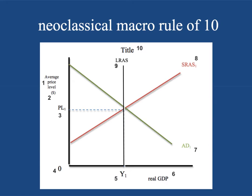Very simply, the 10 components are: number one, the average price level on the vertical axis; number two, a currency label; number three, PL1 — average price level one; number four, a zero where the vertical and horizontal axes intersect; number five, Y1 — the initial equilibrium quantity of real GDP at full employment on the LRAS curve; number six, real GDP on the horizontal axis; number seven, aggregate demand labeled AD1; number eight, the short run aggregate supply curve labeled SRAS1; number nine, the long run aggregate supply curve labeled LRAS1; and number ten, the title of the diagram.